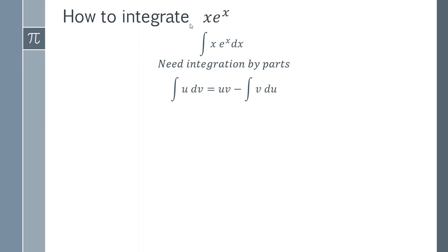So if we were to choose e to the x to be u, when we find the derivative of that to get our du, it's going to be completely unhelpful. We're going to just keep getting e to the x over and over again.